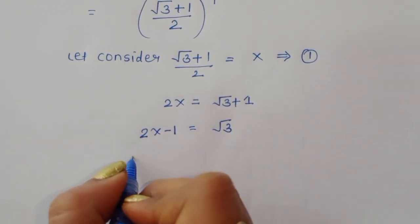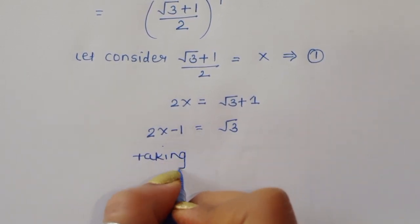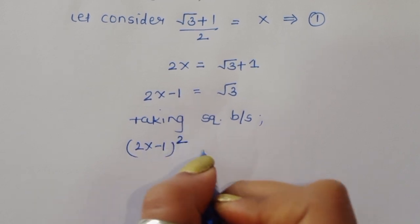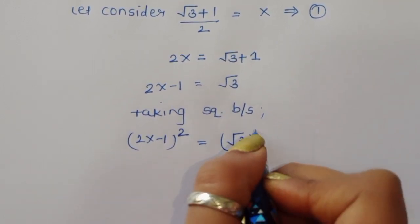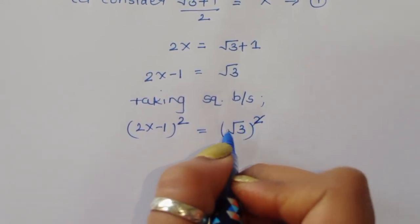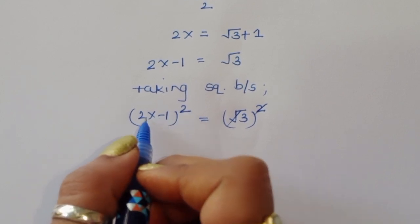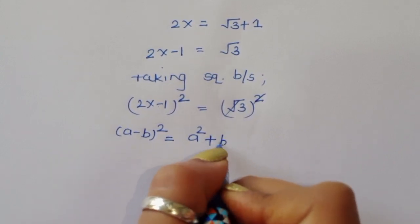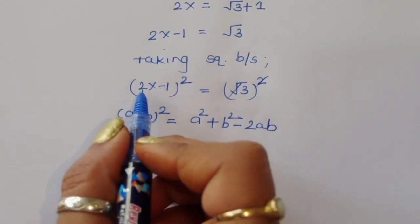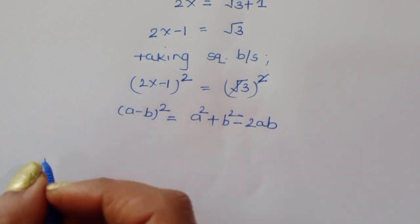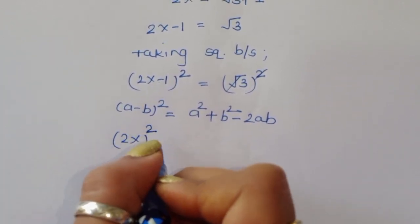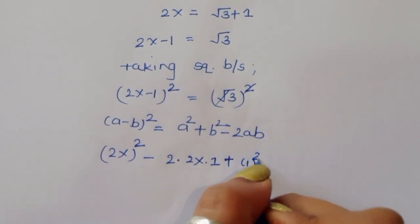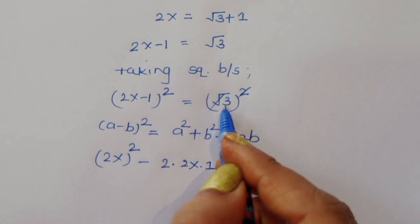Now we square both sides: (2x minus 1) squared equals (square root of 3) squared. The square cancels the square root on the right. Expanding the left side using (a minus b)² = a² + b² minus 2ab, where a is 2x and b is 1, we get 4x squared minus 4x plus 1 equals 3.